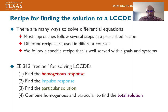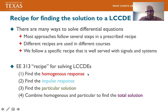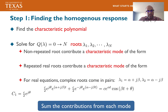The recipe we're going to use for solving these equations may differ from what you learned, which is why we're spending a whole lecture on it. The recipe is: find the homogeneous response, find the impulse response, find the particular solution, and combine them all to get the total solution — essentially four steps, each potentially involving multiple sub-steps.